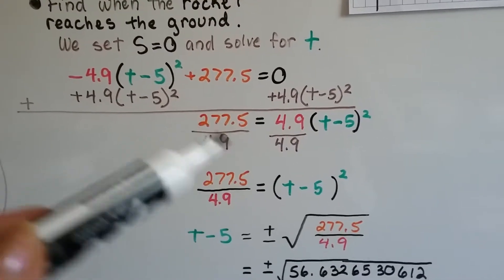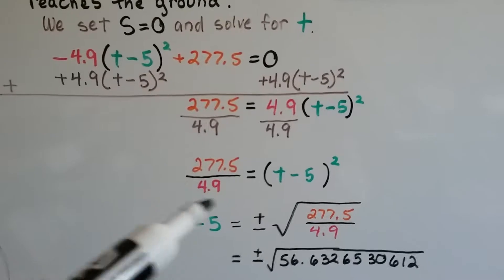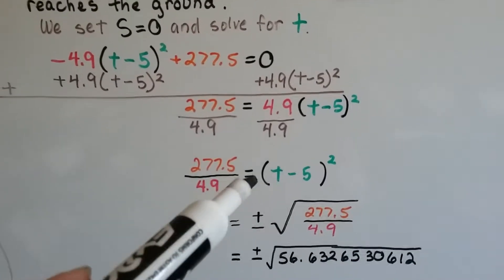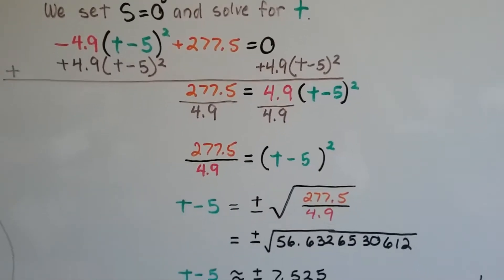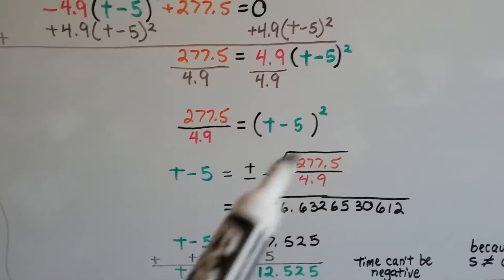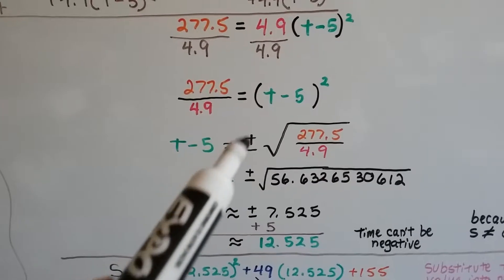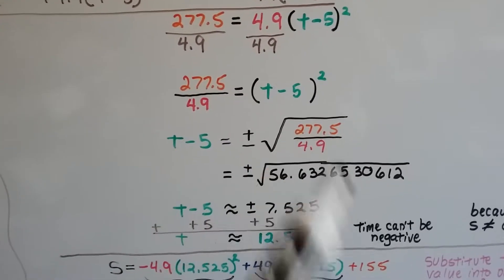We can divide each side of this equation by the 4.9, turn that into a 1. Now we've got this rational number is going to equal this square. To remove the square, that little to exponent, we just put a radical sign around this side. We can say that t minus 5 is equal to plus or minus the square of this rational number.